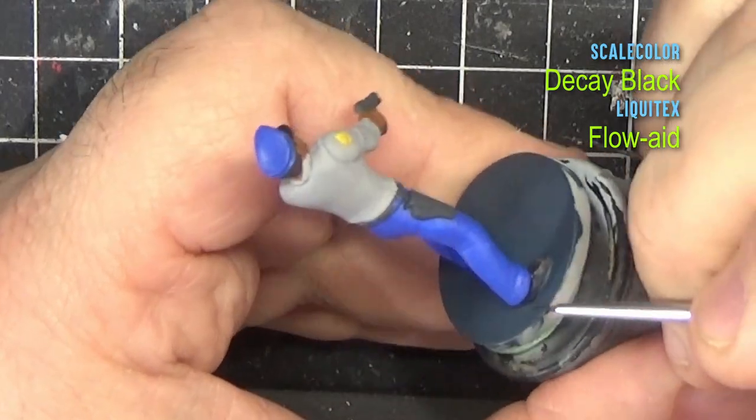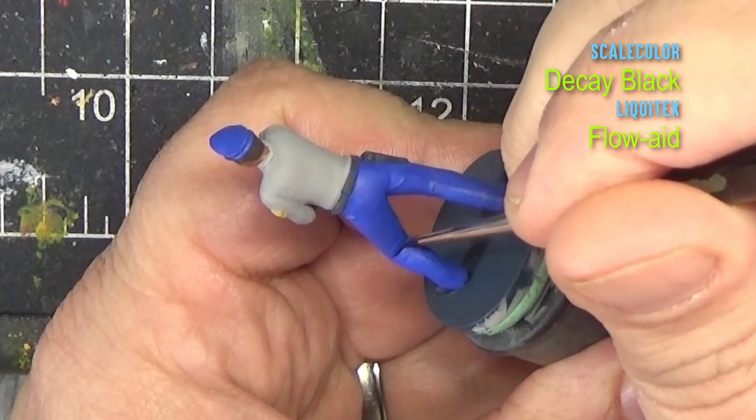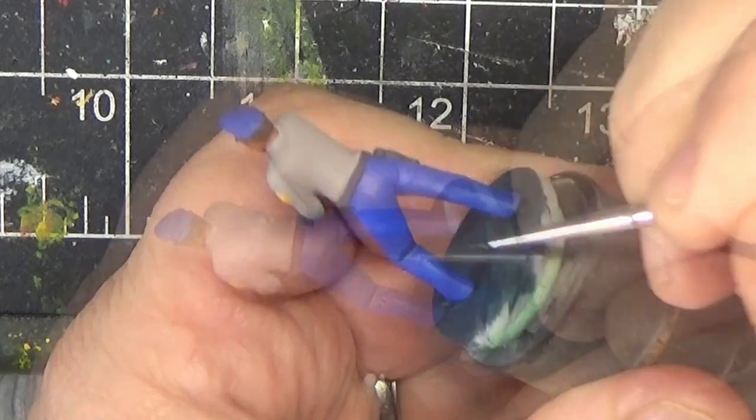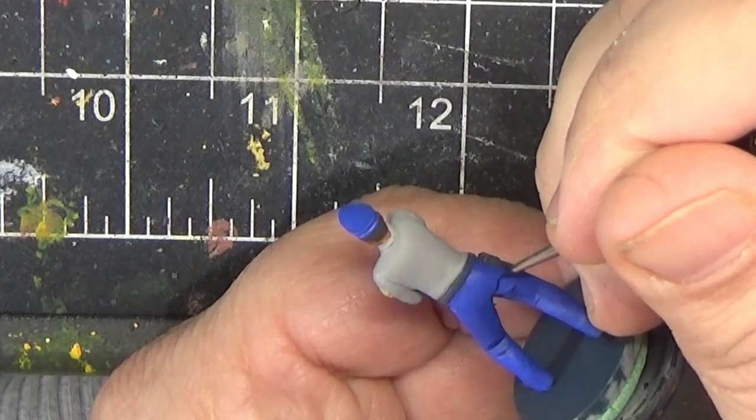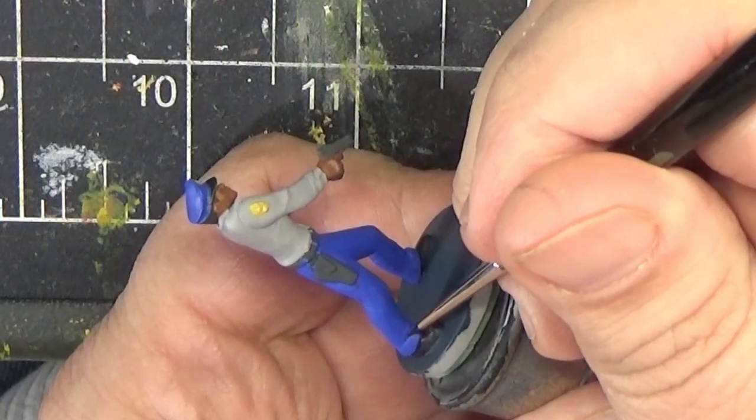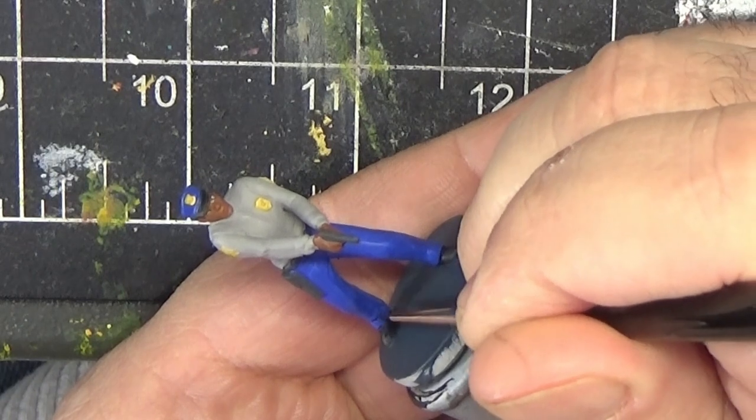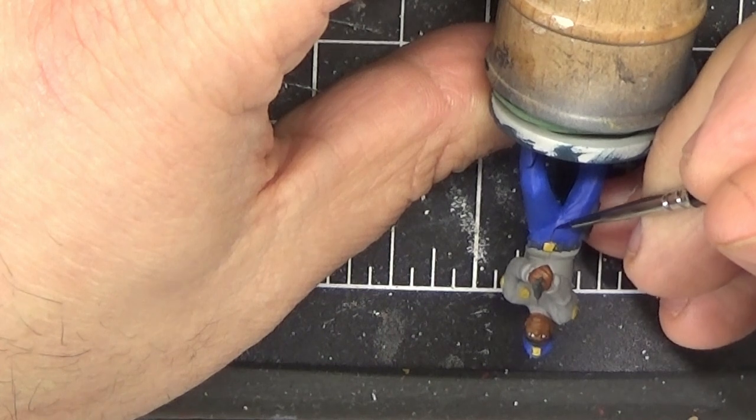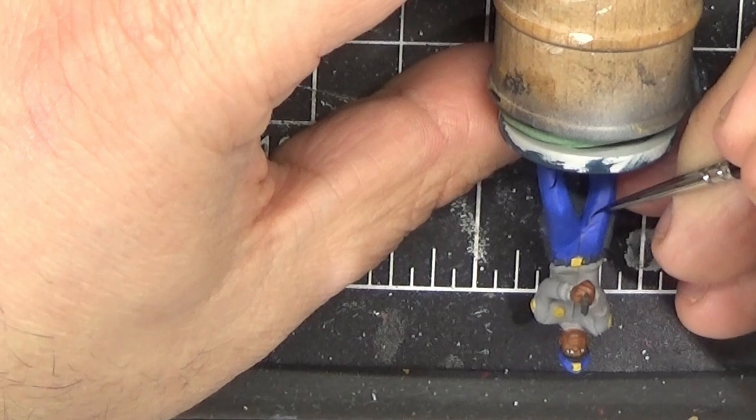And now the most time-consuming bit of this is the dark lining, where we go around and we put a black line anywhere where there's a crease in the fabric or a separation between elements of the miniature. This is the main way we're going to achieve contrast on these because we aren't doing traditional shading. In order to get the paint to flow nicely off the brush, I mix it with a little bit of flow enhancer. I talk a little bit about this in some of the earlier videos in the series, but I assume you've probably seen those by now and don't need me to repeat myself.